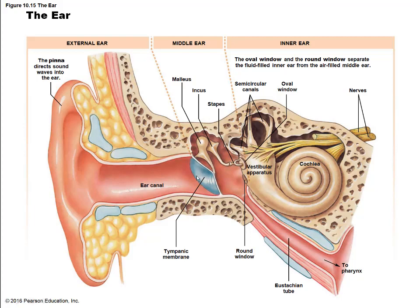The tympanic membrane starts to vibrate, and this vibration is picked up by the malleus, conducted to the incus, then the stapes, towards the oval window. The purpose of these ossicles is to amplify the sound — picking up the frequency and amplitude of the sound, maintaining the same frequency but amplifying the sound so that it continues to propagate further.